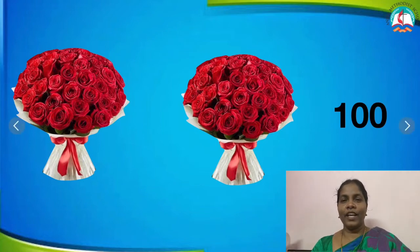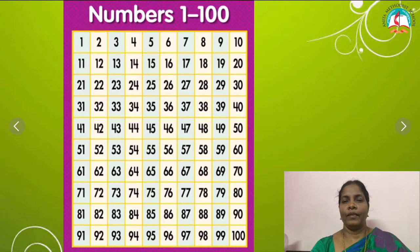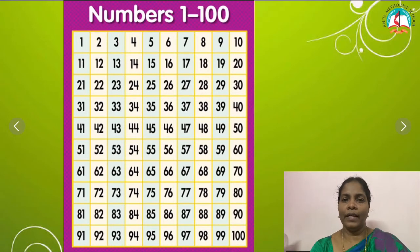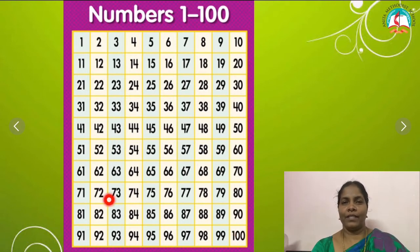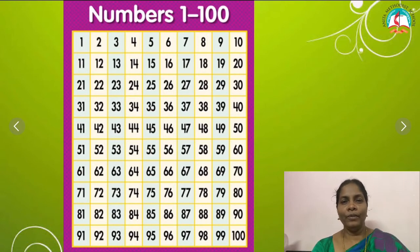Look at the numbers chart — from numbers 1 to 100. What you have to do? You have to sit and learn these numbers from 1 to 100. You have to learn, children. Will you do it? Good.